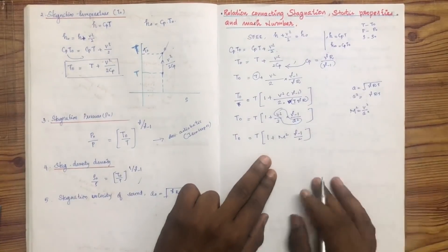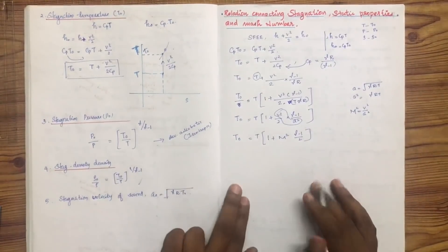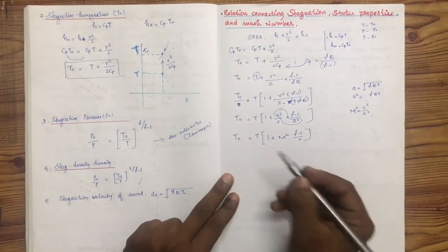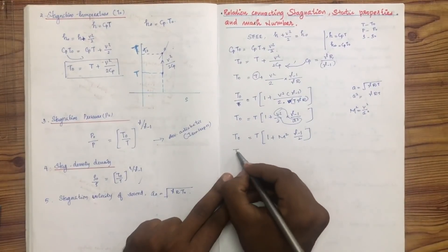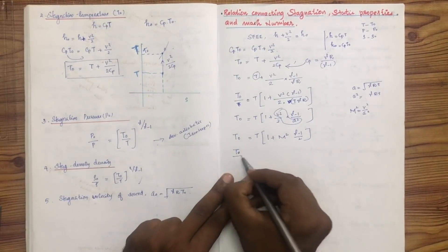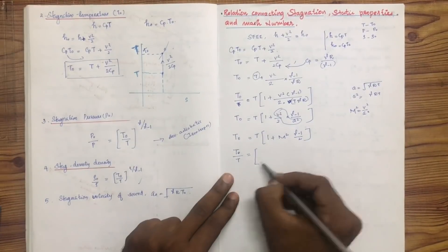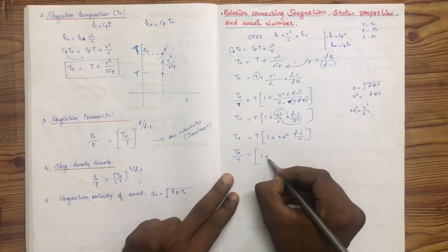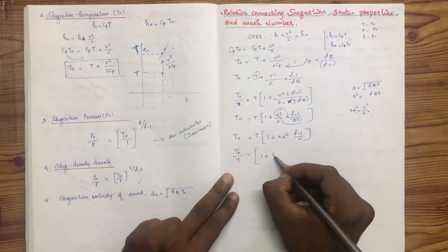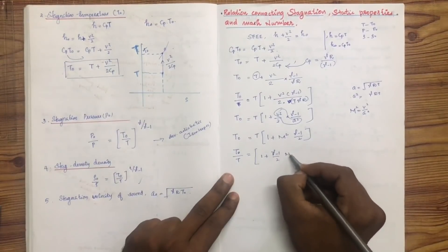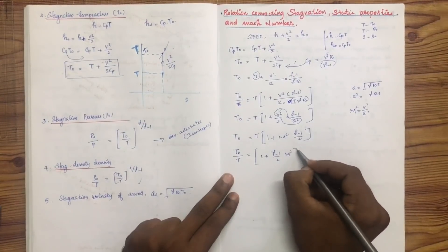This gives the relationship connecting Mach number, static temperature, and stagnation temperature. That is T0 divided by T equals 1 plus gamma minus 1 by 2 into M squared. These are the three key isentropic equations.